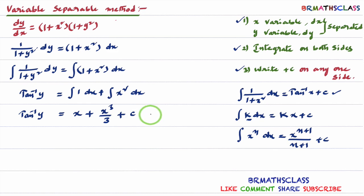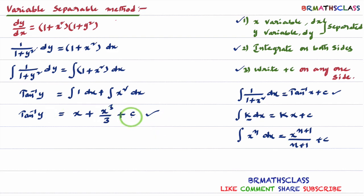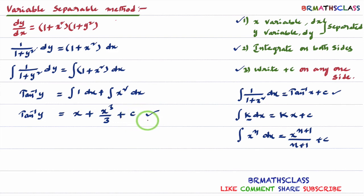Further simplification is also possible, but I recommend you stop this problem here. To avoid confusion, try to avoid textbook answers. If plus c is taken on the left hand side instead, they get a different-looking answer. In place of plus c, they can write log c also. To avoid the confusion, avoid textbook answers. This much simplification is enough. This is the general solution for the given differential equation.